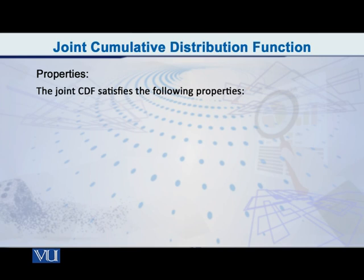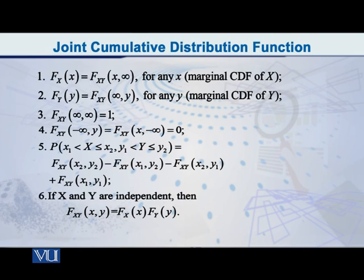Yeh jo bunyadi definition hai. After this, let us focus on the properties of the joint CDF. As you can see on the screen, there are six properties. The first one reads as follows: the marginal CDF of X, capital F of X at the point small x, is equal to capital F of the random vector XY at the point x, infinity.